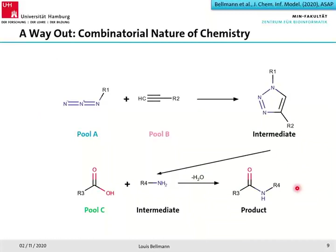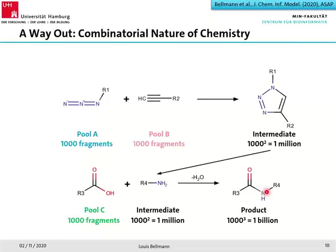To avoid enumeration of compounds in a chemical space, one possibility is using combinatorial chemistry. In this reaction scheme example, we have two consecutive reactions: fragments from pool A and pool B generate an intermediate product forming a triazole, and then that intermediate together with a fragment from pool C generates an amide bond to give the final product. If we assume a thousand fragments for each pool, we end up with a million intermediate products and a billion final products — yet we only have three thousand fragments total.